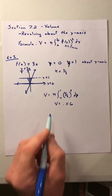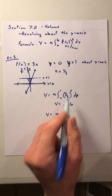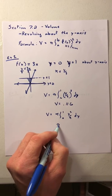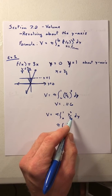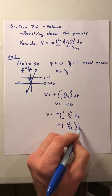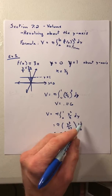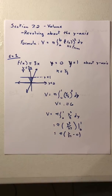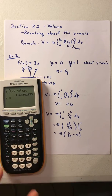If you prefer to do it by hand: volume equals pi times the integration from 0 to 1 of y²/9 dy. Integrating, we get pi times y³/3, and since we're already dividing by 9, we divide by 27, evaluated from 0 to 1. Plugging in 1 gives us 1/27 minus 0. Taking pi times 1/27, which is pi divided by 27, we end up with the same exact answer.